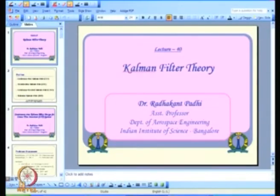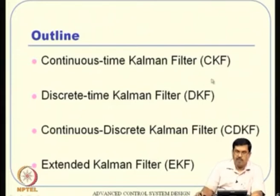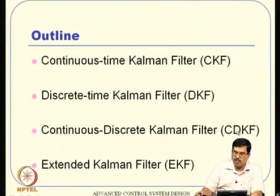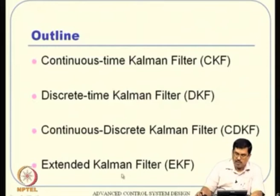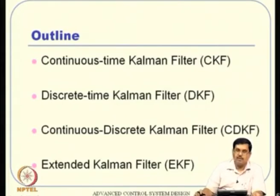This lecture is about Kalman filter theory. The outline is: first, continuous-time Kalman filter (touched on last class); then discrete-time Kalman filter, where both system dynamics and measurements are in discrete form; then continuous-discrete Kalman filter, where system dynamics is continuous but measurements arrive at discrete times. Finally, this gives us a platform to discuss the Extended Kalman Filter (EKF), which is heavily used in practice — most of the time when people say they use a Kalman filter, they mean they have implemented an EKF.